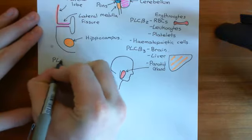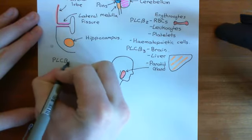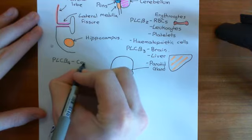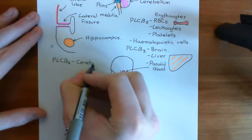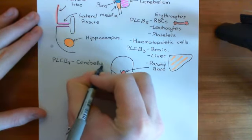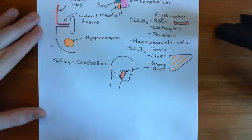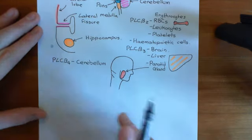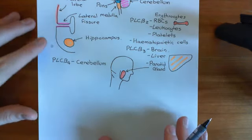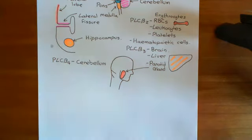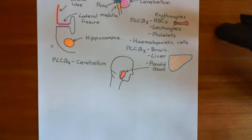Finally, phospholipase C beta 4 enzymes — with two splice variants, 4A and 4B — are found heavily within the cerebellum. This is the end of this video. In the next video, the structure of phospholipase C beta enzymes will be discussed.